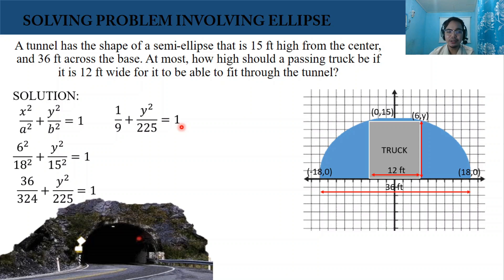So our goal here is to find the value of y because that is the height of our truck at most. So we have y squared over 225 equals 1 minus 1 over 9. So that's 8 over 9.